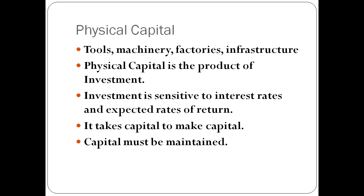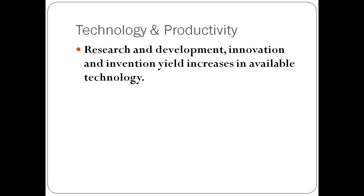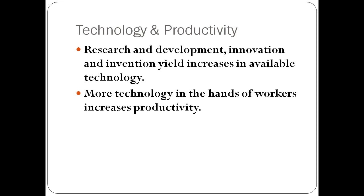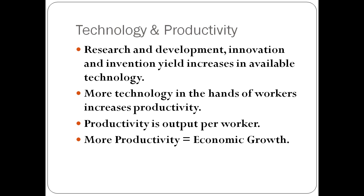A second factor that can promote long-run economic growth is technology and productivity. Research and development, innovation, and invention yield increases in available technology. More technology in the hands of workers increases productivity — each worker can produce more. Productivity is simply output per worker, so more productivity means more economic growth. Technology is essential for economic growth because it makes people more productive, leading to more GDP being produced and more to go around, which helps solve the fundamental economic problem of scarcity.